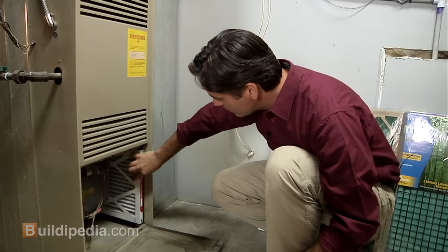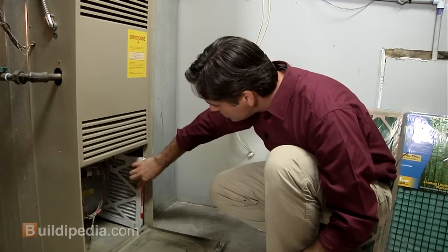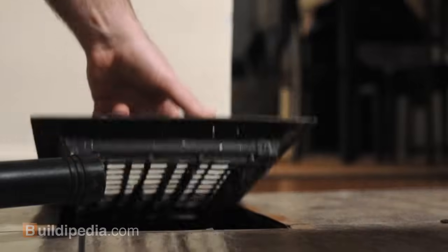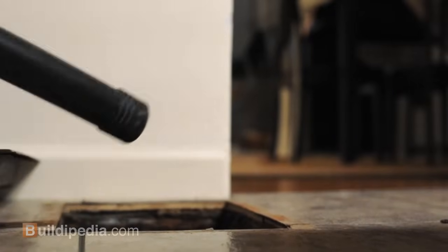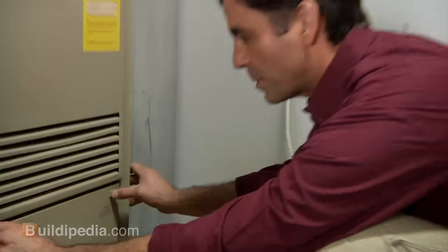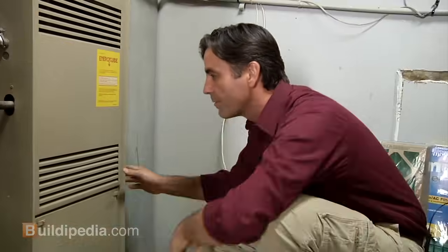Now once the filter's in, if you happen to notice some excess dirt and grime down here, you can take a vacuum and clean that out. It's also a good time of year to clean out the floor vents in your house to get any dirt out of those. Just close our access panel back up and make sure we turn our furnace back on.